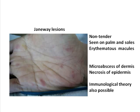Janeway lesions, contrary to Osler's nodes, are non-tender, and they are seen in the palm and in the soles. They look like — as you can see there — erythematous macules, sometimes even hemorrhagic macules. Most experts believe that they are nothing but micro-abscesses, which are nothing but metastasis of the infective process in the heart.